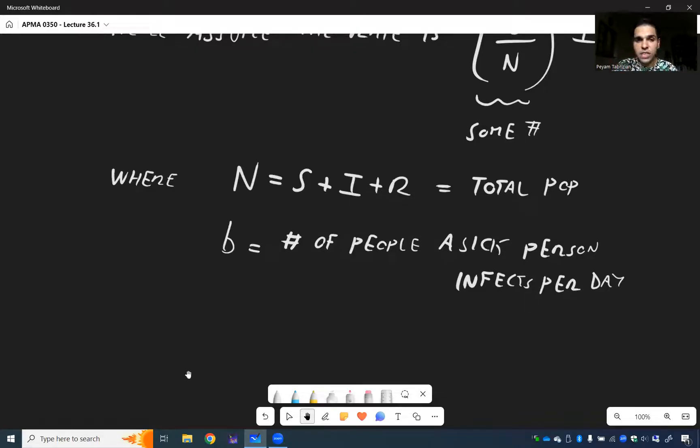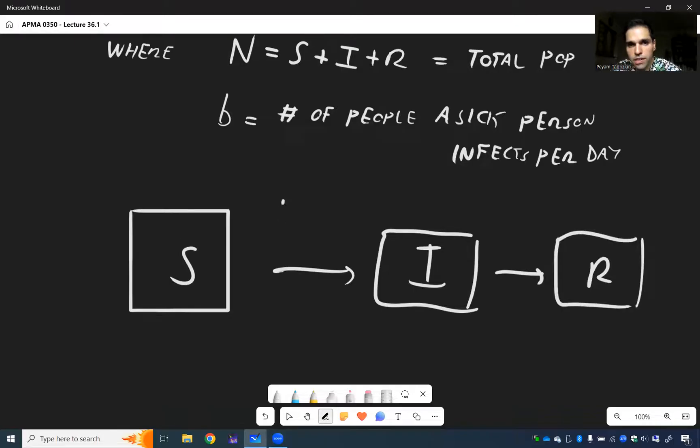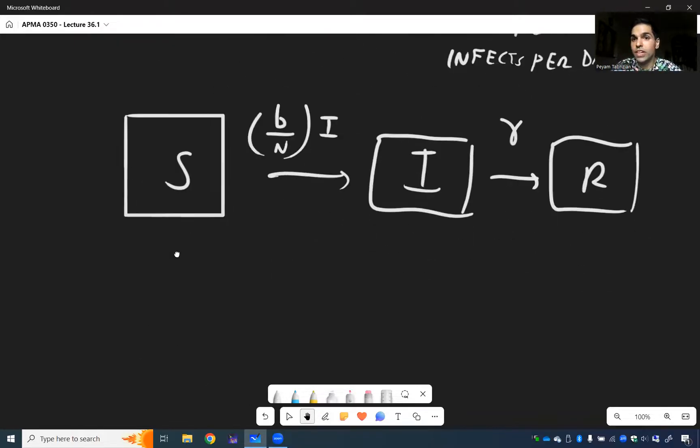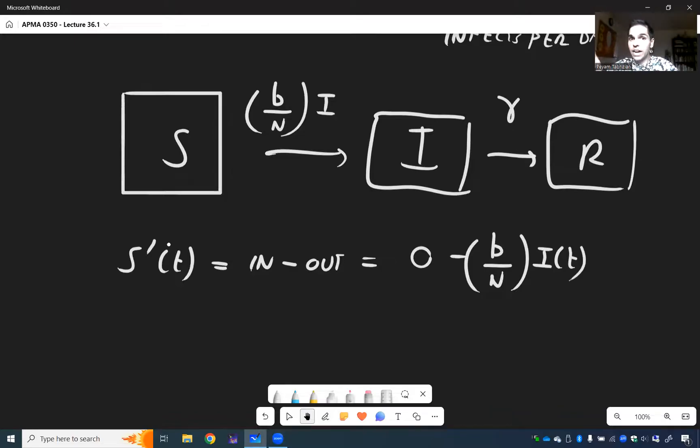And this is great. Now we have everything to complete our model. So I would like to remind you, we have S, and then I, and then R. So again, with the rates B over N I, and then gamma. All right, now let's use our in and out equation. So S prime of t, that's in minus out. There is nothing going into S. So it's zero. But what's going out is the rate is B over N I. That's the rate itself. And then times S of t. Right? Rate times whatever is in the tank.